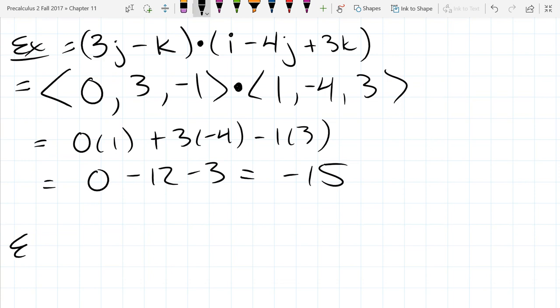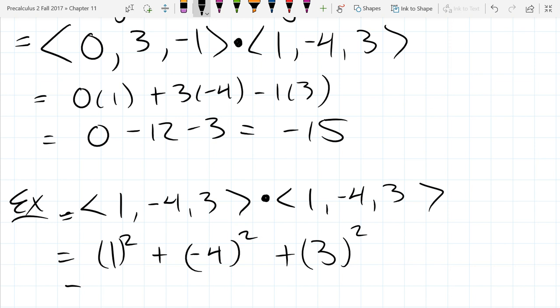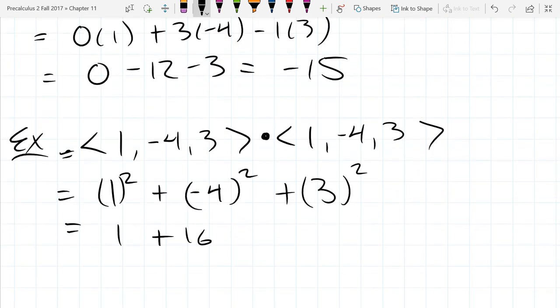And the last dot product we're going to compute, we're going to do a dot product with a vector with itself. So compute this dot product now. So we're just dotting a vector with itself, and we get 26.